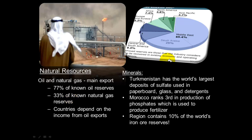Oil is not the Middle East's only export — North Africa and the Middle East are also very rich in natural minerals. Turkmenistan has the world's largest deposits of sulfate, a mineral used to create paperboard, glass, and detergents. Morocco ranks third in the world in phosphate production, used to produce fertilizer. This region also contains about 10 percent of the world's iron ore reserves.